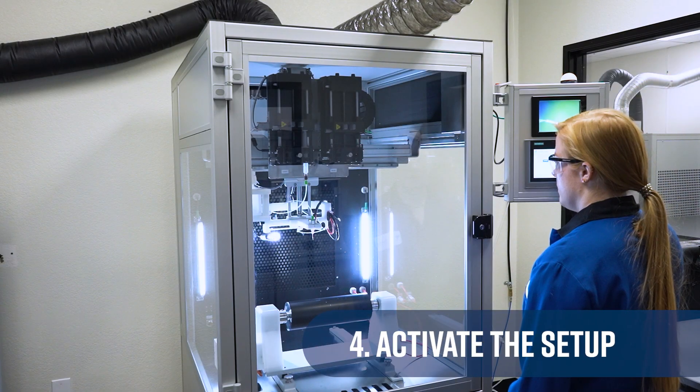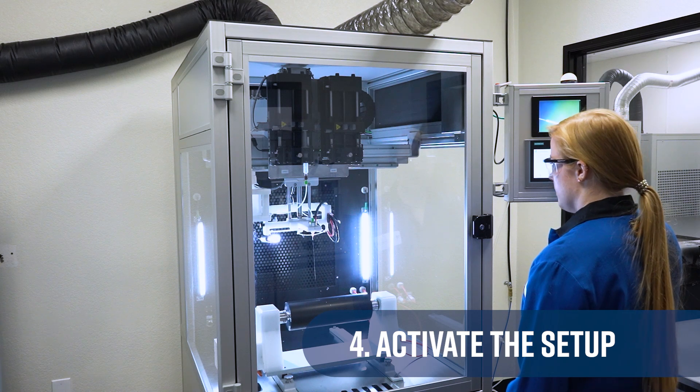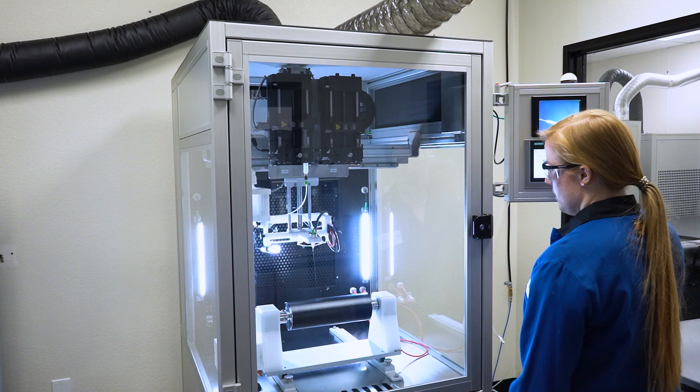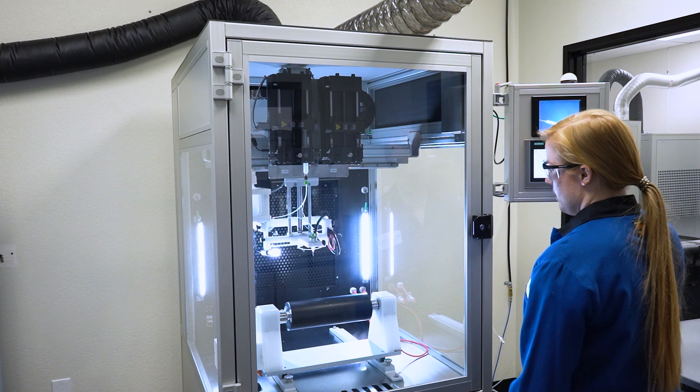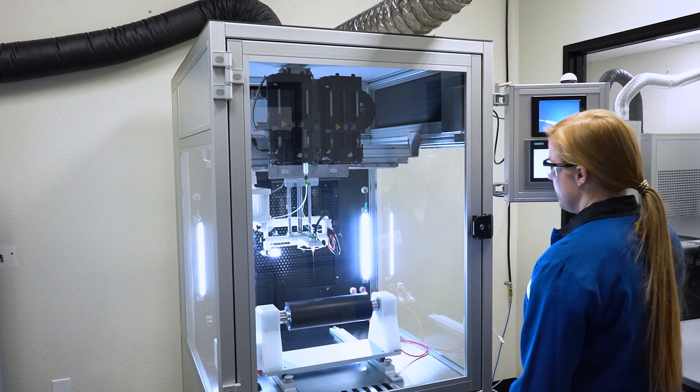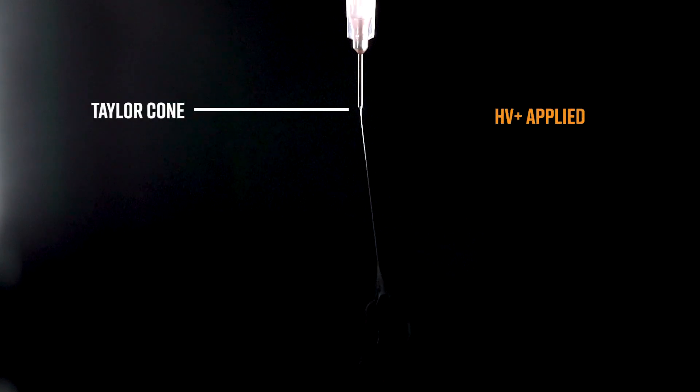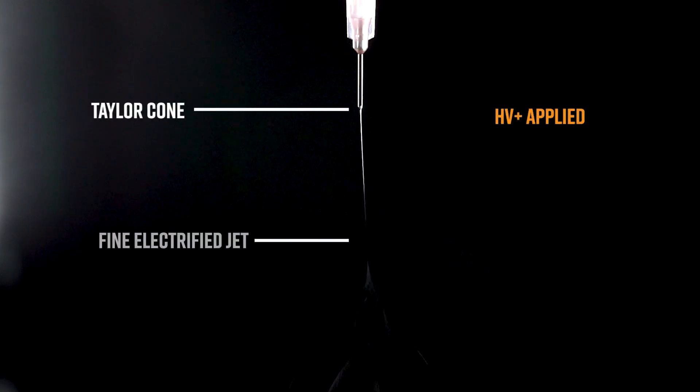Step four, once everything is set up, activate the setup, including the syringe pump, collectors, and any other accessories, and allow them to stabilize for a few moments. Once stabilized, turn on your high-voltage power supply. The polymer solution will be distorted into a cone shape at the tip of the needle before ejecting as a fine electrified jet.